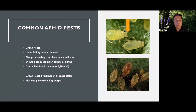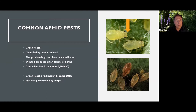Green peach aphid can produce high numbers — they can reproduce seven generations in 48 hours under the right conditions. Babies are born already pregnant, so they are effectively grandparents when giving birth. When a winged aphid is produced, it's for the purpose of moving to another location to give birth. In green peach, it builds up fairly rapidly in one spot and then produces a winged form — usually after dozens of births, then the winged individual moves on.